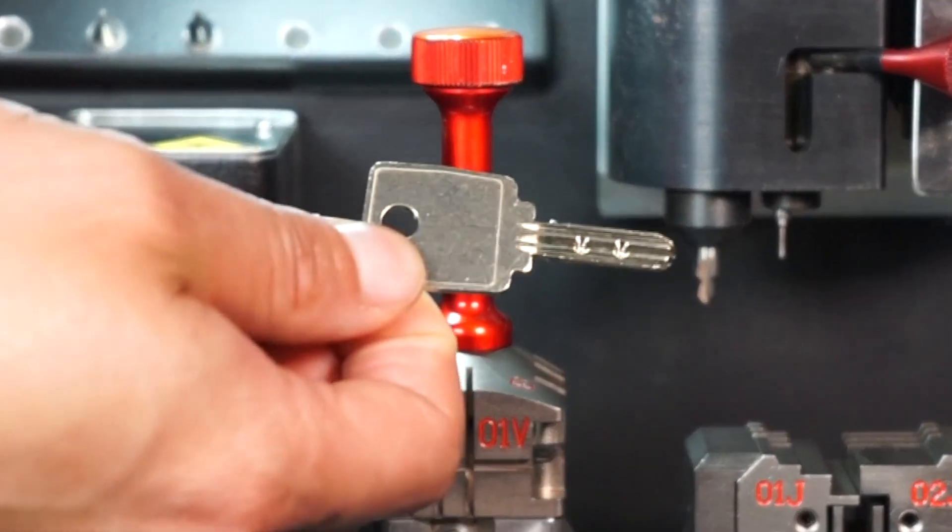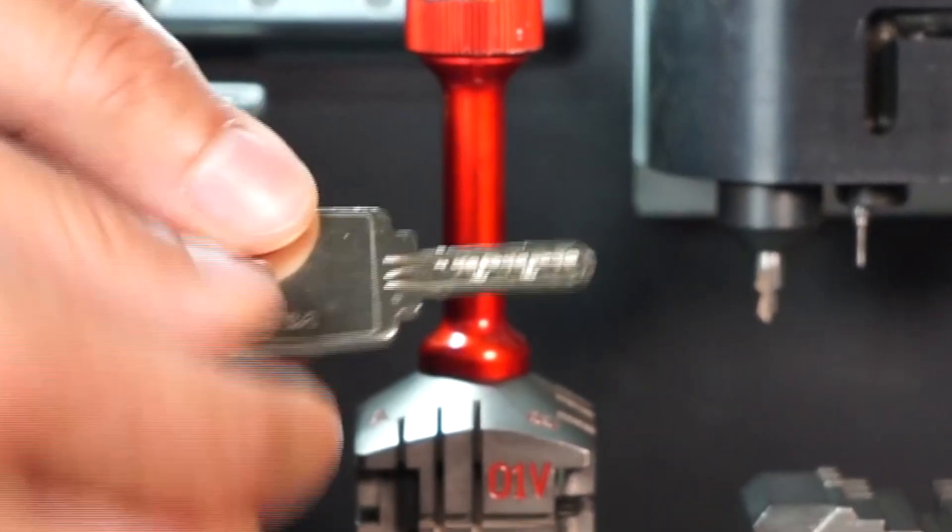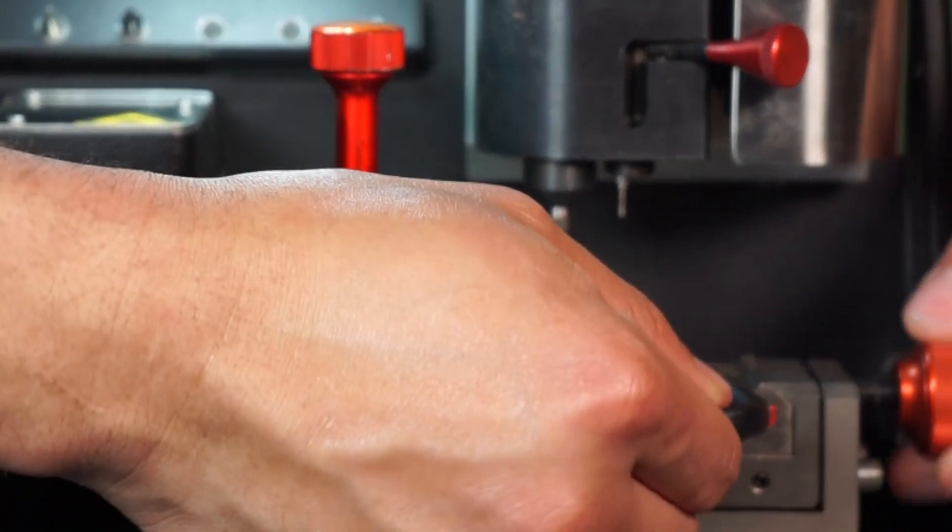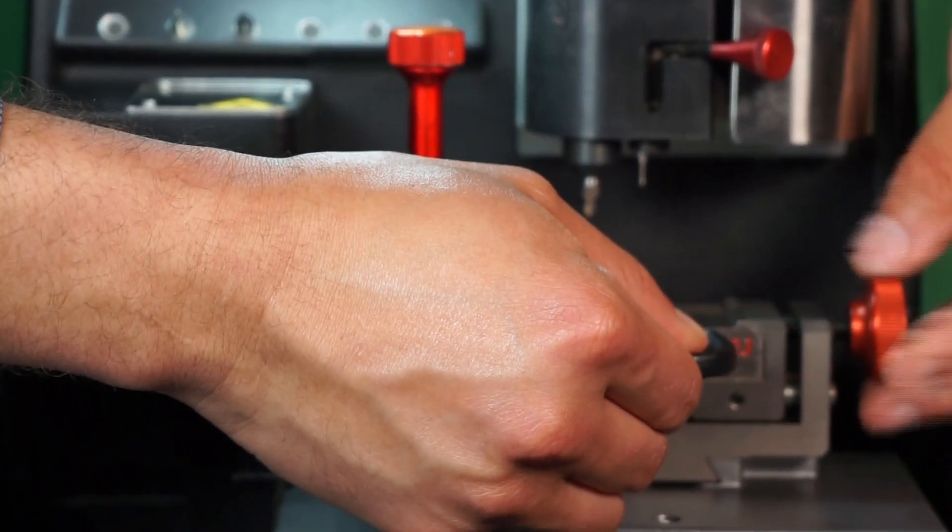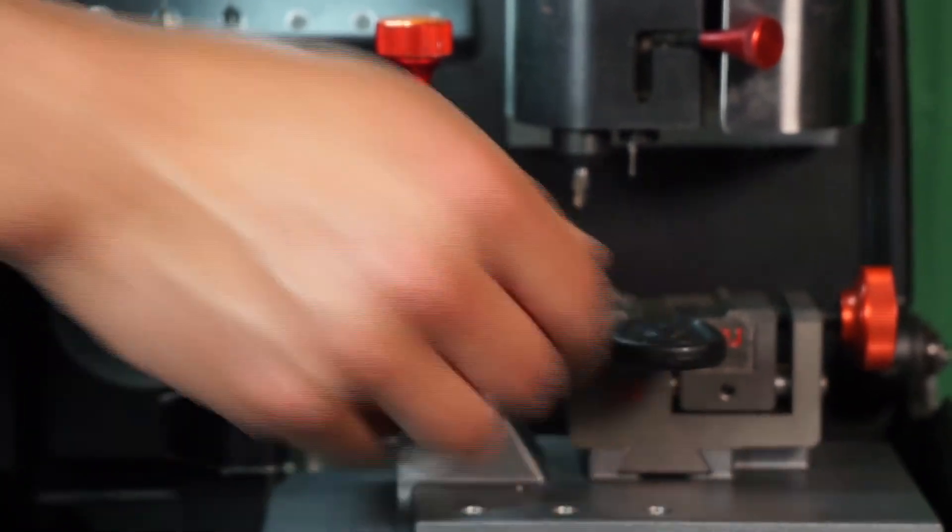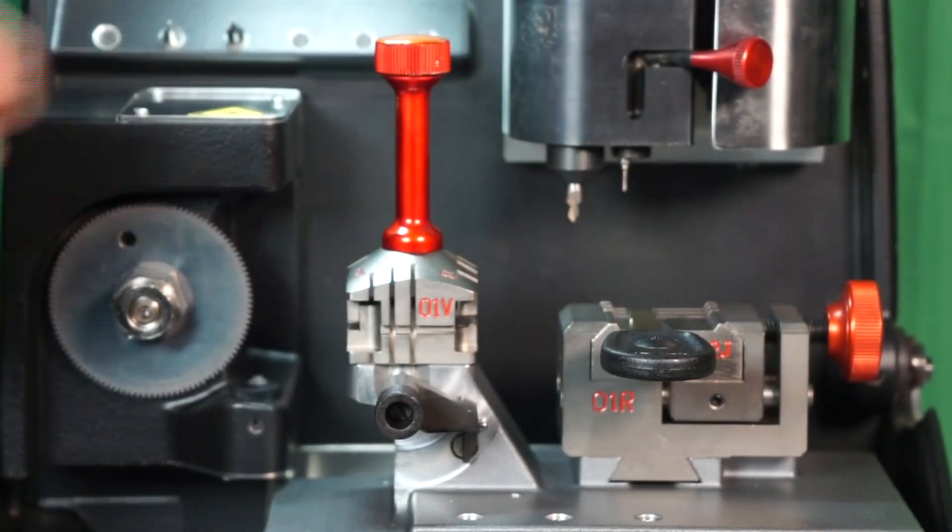It's a very simple procedure for cutting keys on the right-hand side of the machine. You simply take your automotive key, open up your clamp, and insert the key in place in the clamp like so.